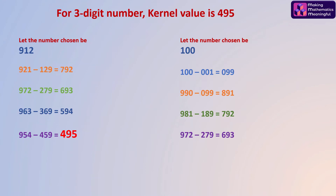Let me choose another example: the number is 100. Check out the method. After six iterations you have the number 495. You may try this with any three-digit number — you will always end up with 495.